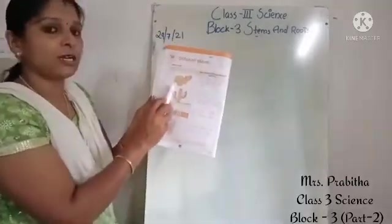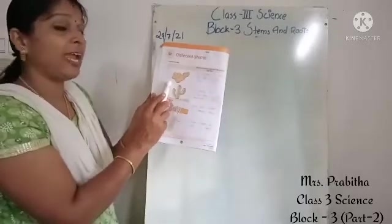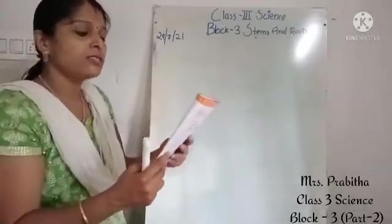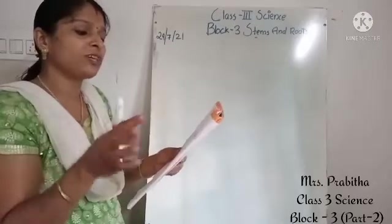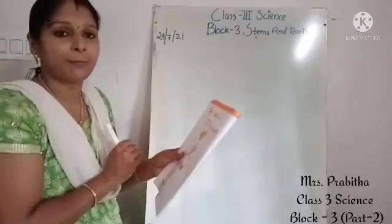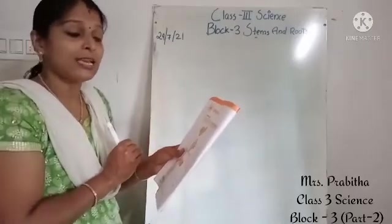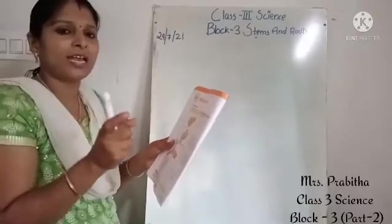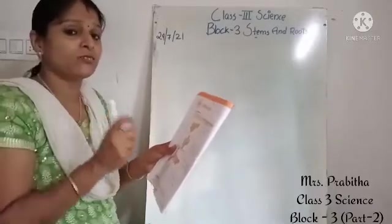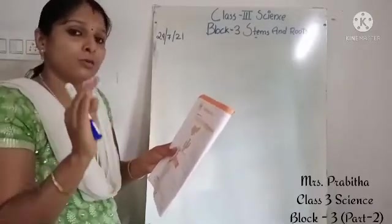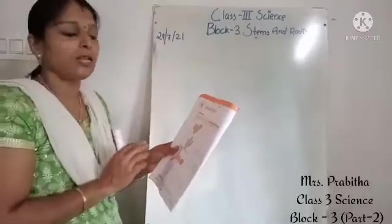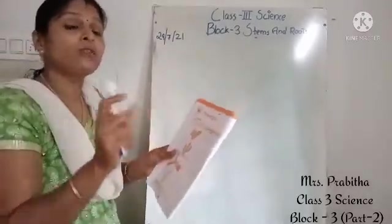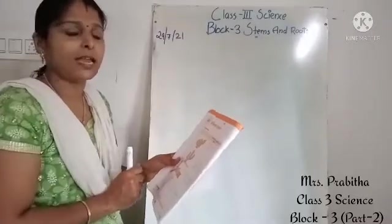First picture, Picture A — it is ginger. What is the function of the stem in the ginger plant? It looks fat. Why does it look fat? Because stem stores food for the plant. It looks fat because the stem stores food for the plant.